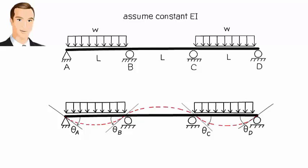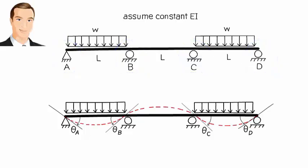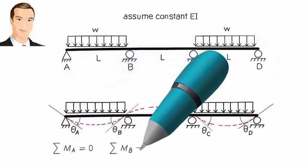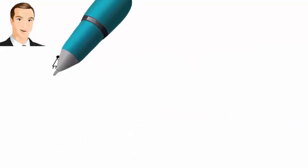But what are equilibrium equations, and how do we get them? Since each joint has to be in equilibrium, the sum of moments at A, B, C, and D must be zero. To write these equations, we start by isolating the joints, like this.